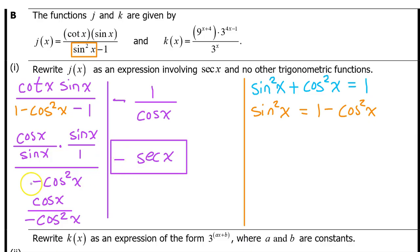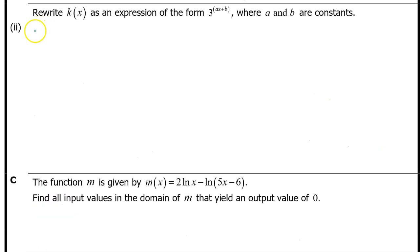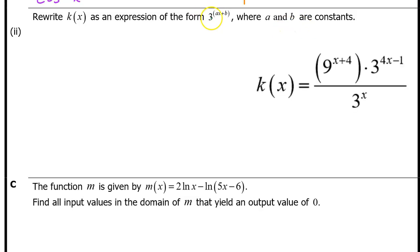Be careful to include the negative, which gives us negative secant x. A common mistake is to simply have secant x. The AP graders will ignore your scratch work, but I recommend separating it by a vertical line and labeling it as scratch work. B part 2: Rewrite k of x as an expression in the form 3 to the ax plus b power, where a and b are constants. We need everything to have a base 3, and 9 can be rewritten as 3 squared.